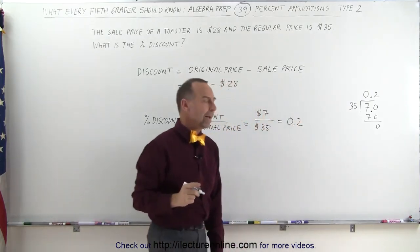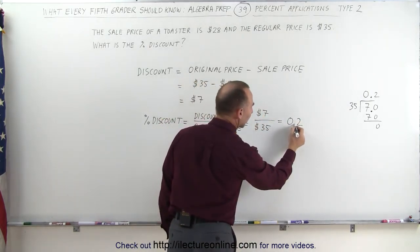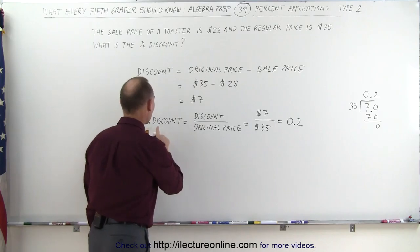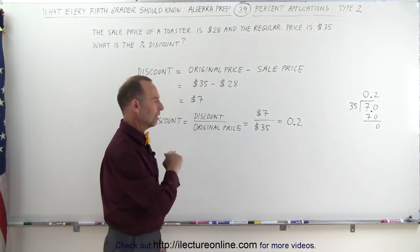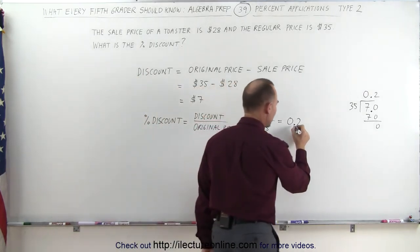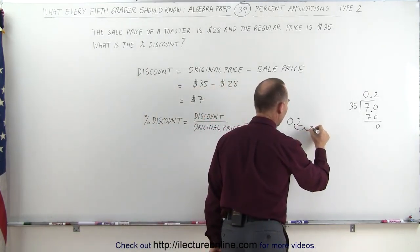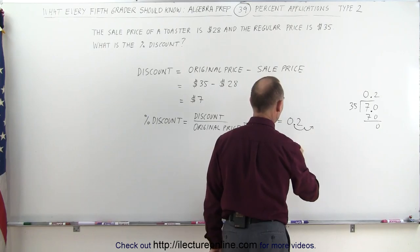But now we have it in decimal format, we don't have it in percent format. We want to look for the percent discount, which means we have to convert that to percent. The way we do that, we move the decimal place over two spots and put a percent sign behind it.